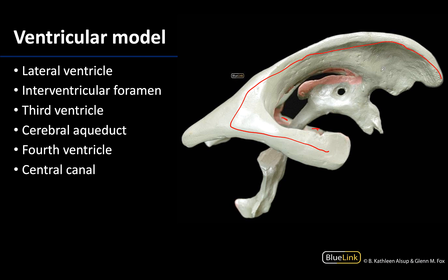These will drain through the interventricular foramina — you can only see one here, similar to the lateral ventricles. The interventricular foramina connect the lateral ventricles to the third ventricle, allowing CSF to flow.